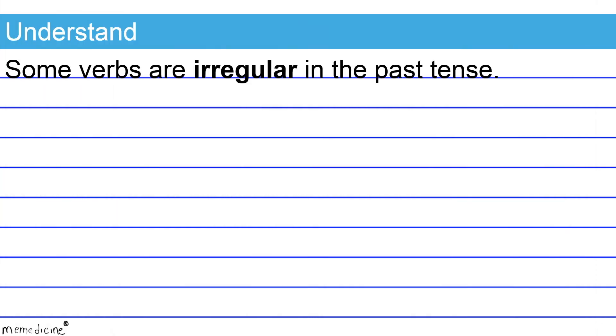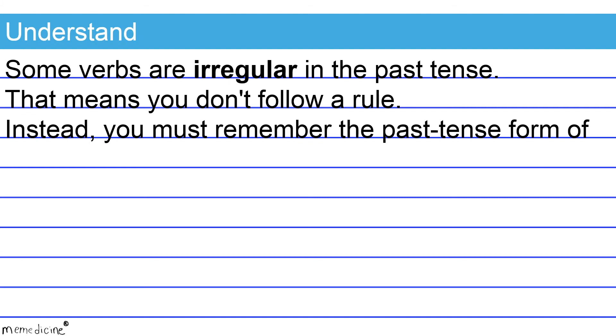Some verbs are irregular in the past tense. That means you don't follow a rule. Instead, you must remember the past tense form of the verb.